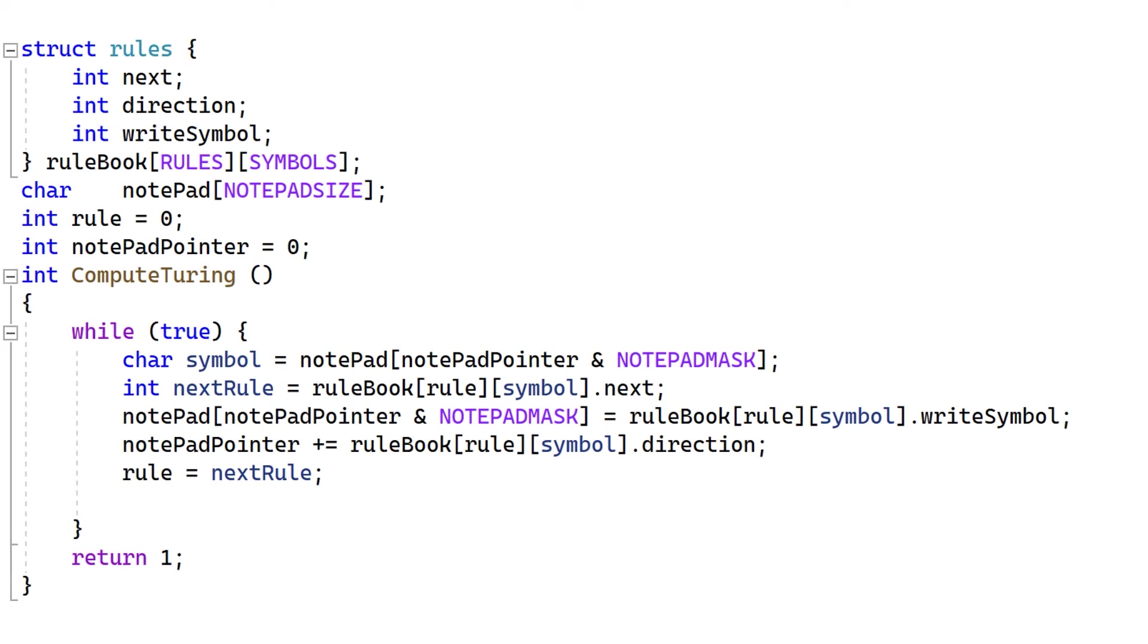I want to briefly revise how this code works. This program was pretty straightforward. It had two data structures, a notepad, which is where we did the arithmetic, and a rulebook, which told us how to manipulate the numbers that we saw on the notepad.